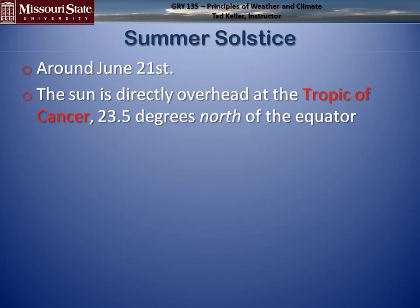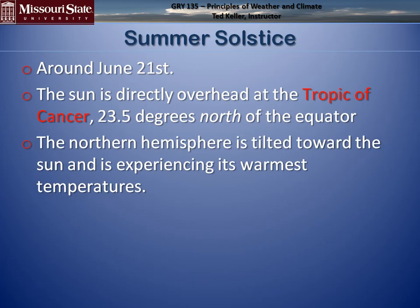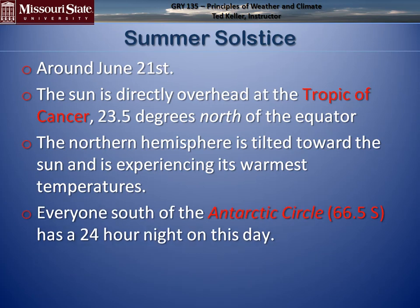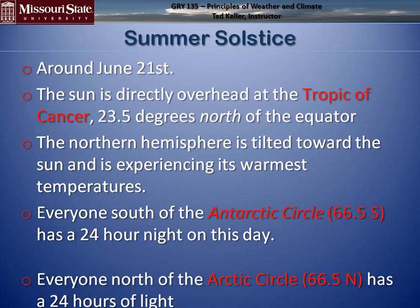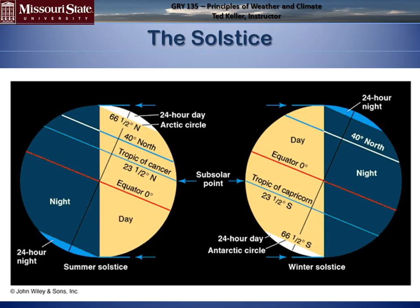At the summer solstice around June 21st, the Sun is directly overhead at the Tropic of Cancer — that line runs between Cuba and Florida, at 23.5 degrees north of the equator. The northern hemisphere is getting the lion's share of energy. Everyone south of the Antarctic Circle has 24 hours of night on this day, and everyone north of the Arctic Circle has 24 hours of light.